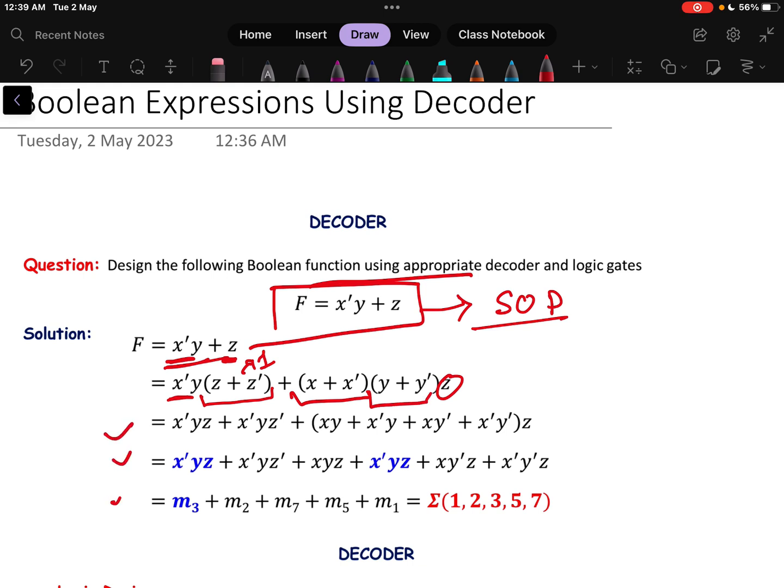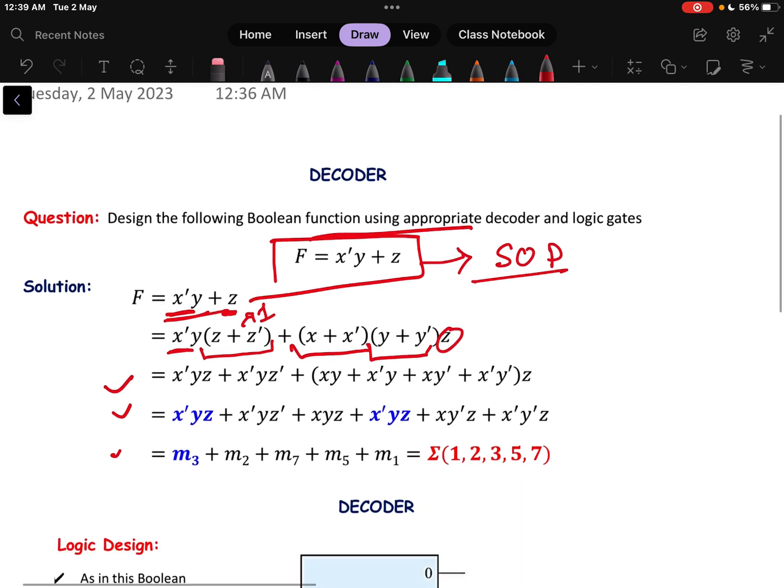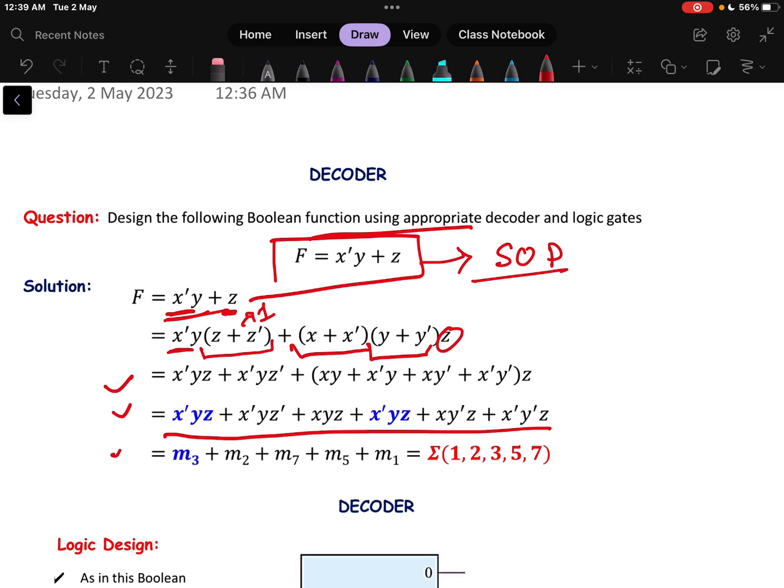After that if we solve with multiplications then I will get that this will be my total minterms. That will represent 1, 2, 3, 5, 7. That is very simple.